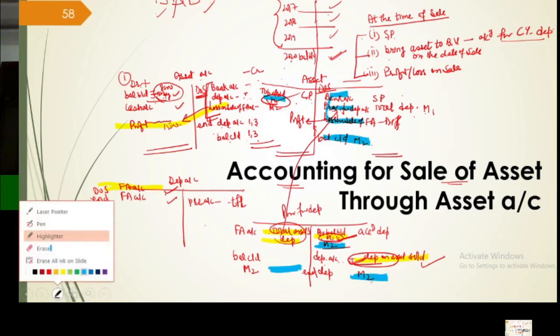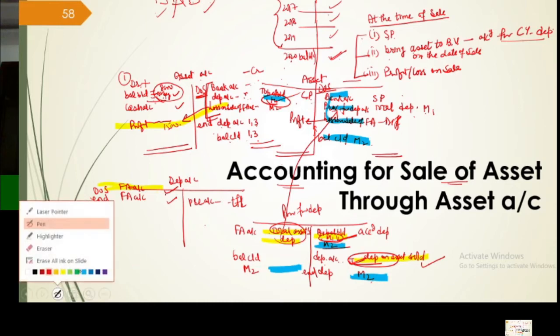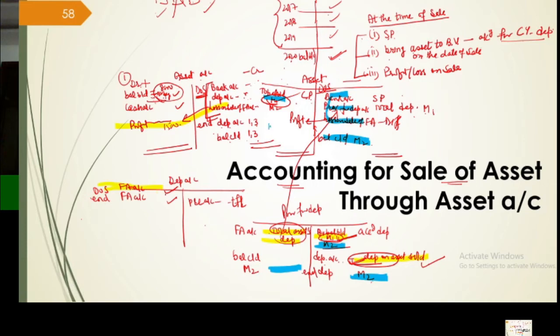Now if you happen to buy any further asset — say a third machine — you record its entry as usual. Its depreciation is also charged. Rest of the things will go as planned, just as we have been doing. The only thing to remember is: for the sold asset, record those three things. It's not difficult.